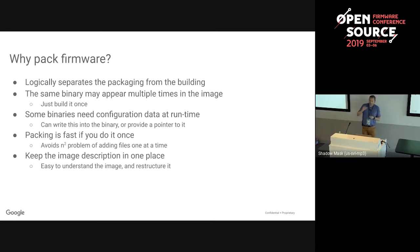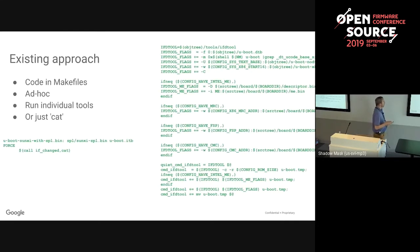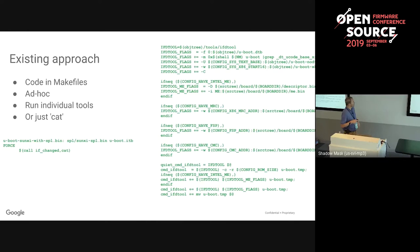Packing is much faster if you do it in one go - continually adding one file to an image means constantly reading, adding, and writing it back. The other nice thing is we can keep the image description in one place. Here's how you used to package x86 binaries: building up flags, running the IFD tool. For sunxi, an ARM chip, you're simply concatenating SPL and U-Boot with cat - but in either case it's ad hoc and it's pretty hard to see the structure of the image.